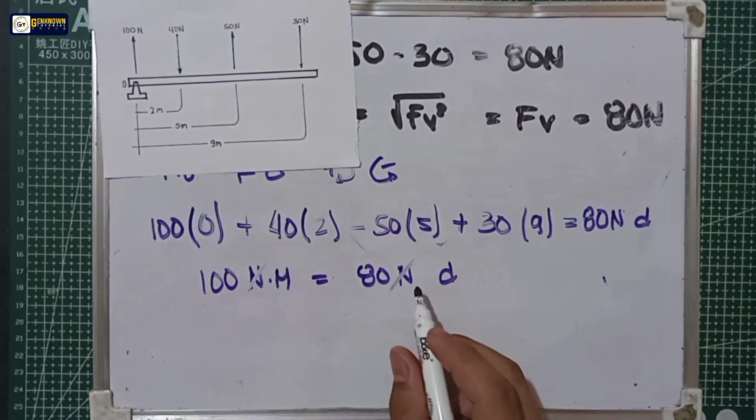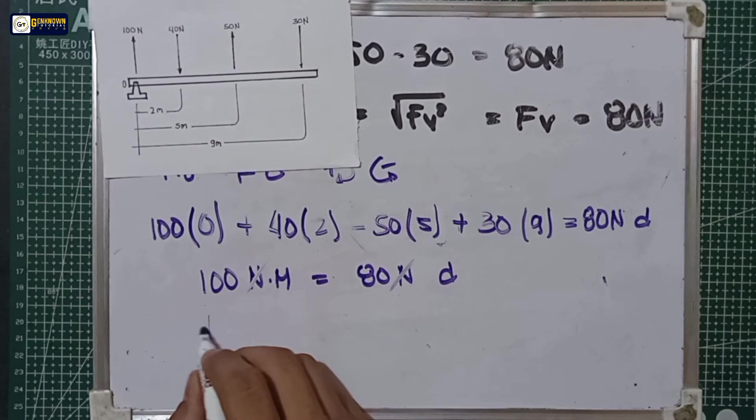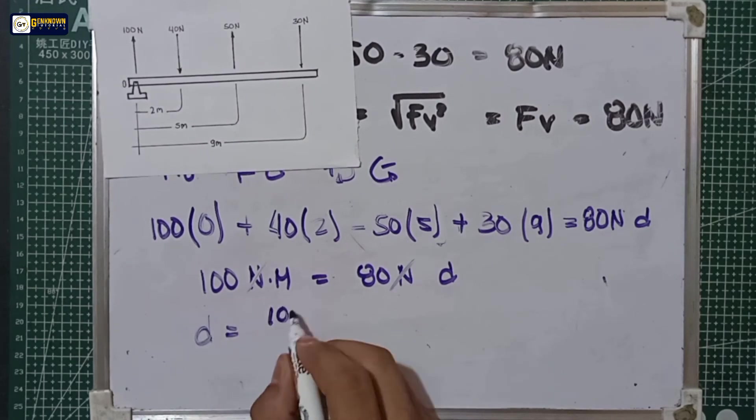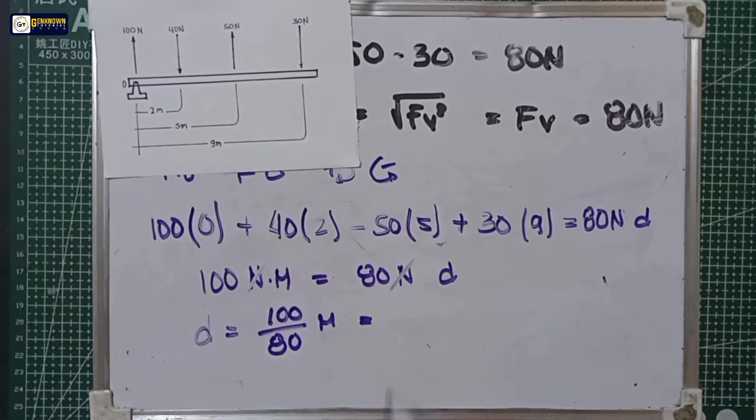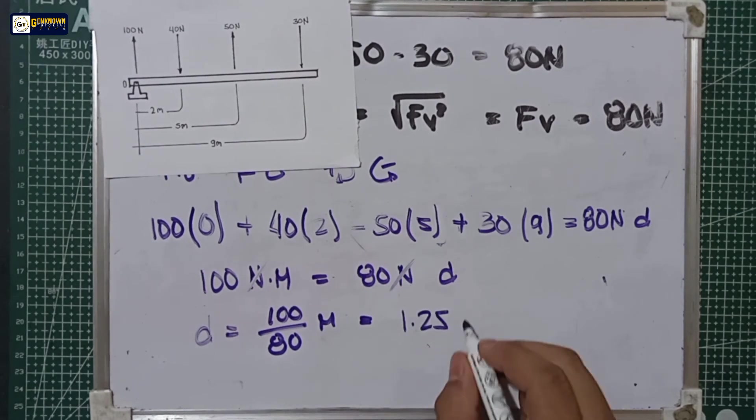So the location of the resultant is equal to d is equal to 100 over 80 meters, or equal to 1.25 meters.